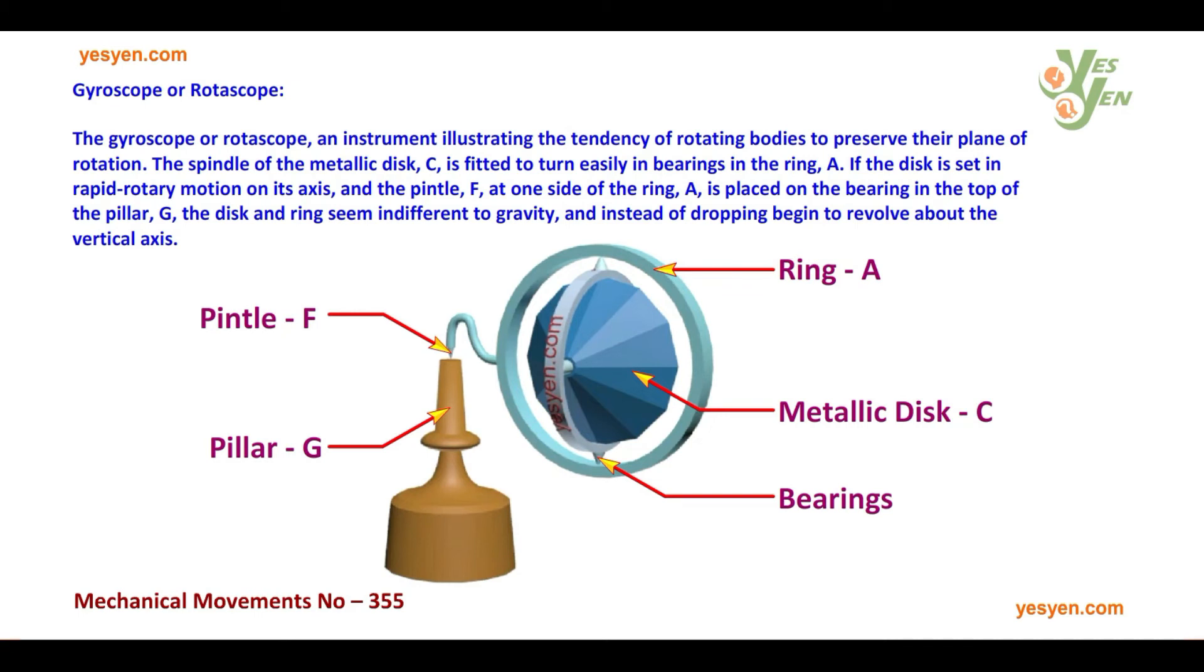and the pintle F at one side of the ring A is placed on the bearing in the top of the pillar G, the disc and ring seem indifferent to gravity and instead of dropping begin to revolve about the vertical axis.